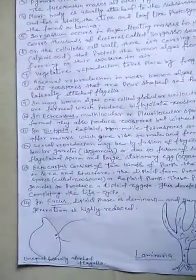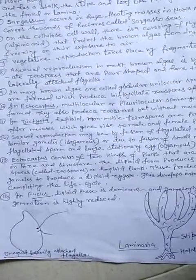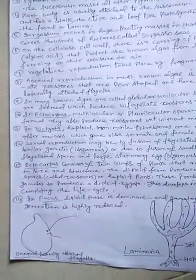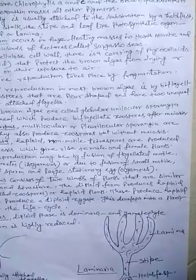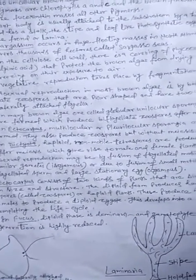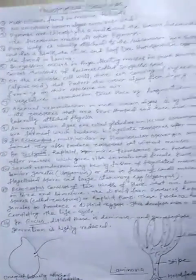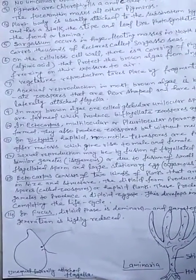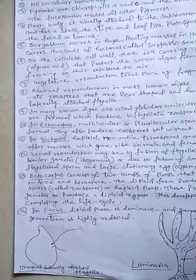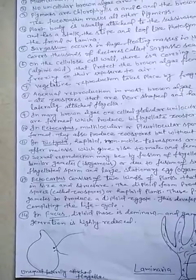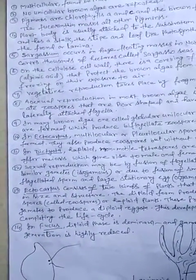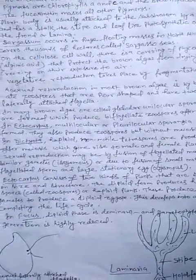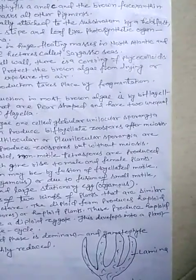Ectocarpus consists of two kinds of plants similar in size and structure. The diploid form produces haploid spores called zoospores, and these haploid spores develop to form haploid plants, which produce haploid gametes. The gametes fuse to form a diploid zygote, which then develops into a diploid Ectocarpus plant, completing the life cycle.